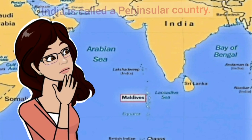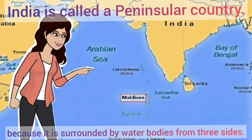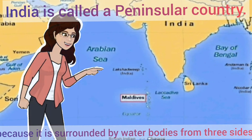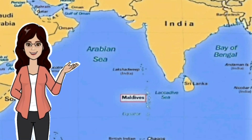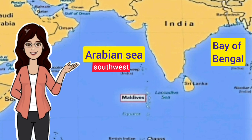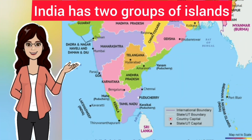Do you know India is called a peninsular country? Because it is surrounded by water bodies from three sides. The Arabian Sea is in the southwest, the Bay of Bengal is in the southeast, and the Indian Ocean is in the south. We also have two groups of islands: the Andaman and Nicobar Islands in the Bay of Bengal, and the Lakshadweep Islands in the Arabian Sea.